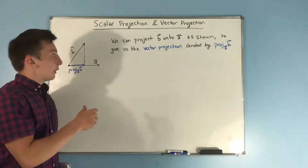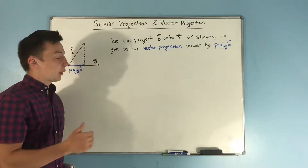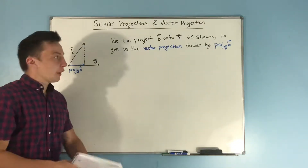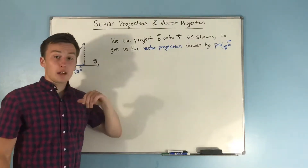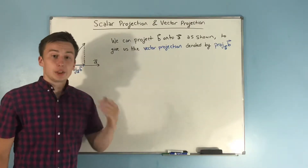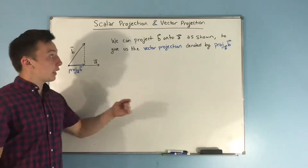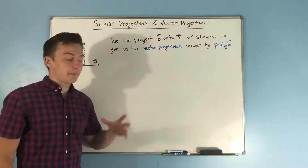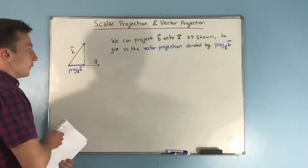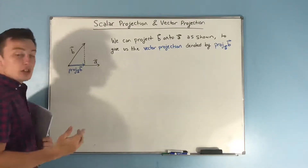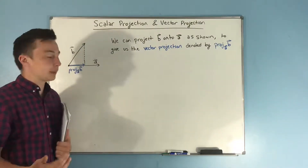In this video we're going to be talking about the scalar projection and the vector projection. The scalar projection and the vector projection have a lot of applications in physics and engineering, and they're something that we can find using the dot product. First off, we need to talk about what is the vector projection and what is the scalar projection.